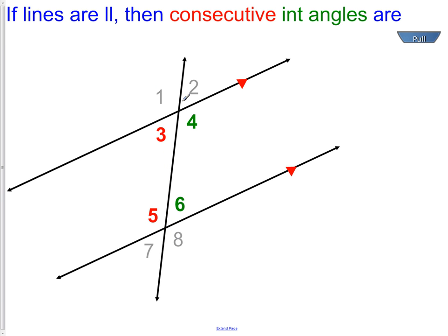Next, we have our consecutive interior angles. That would be angles 4 and 6, or angles 3 and 5. Those angles will be supplementary. If you remember, supplementary angles add up to 180 degrees. That means angle 4 and angle 6, when we add those two angles together, we will get 180 degrees.